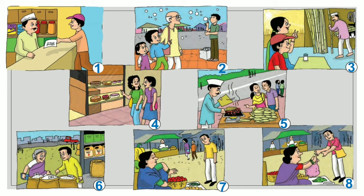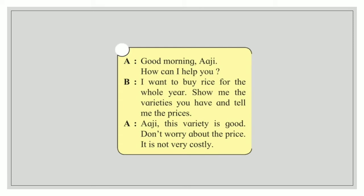First we will find RG. Look at picture number 6 — one lady is talking to the shopkeeper and the shopkeeper is pointing to the sack of rice. So this conversation is related to picture number 6. We will put number 6 to that conversation.